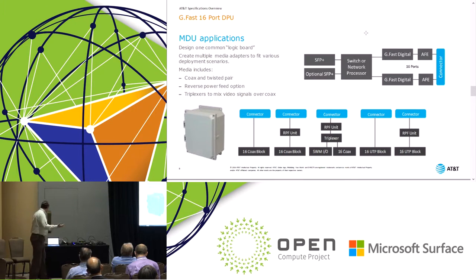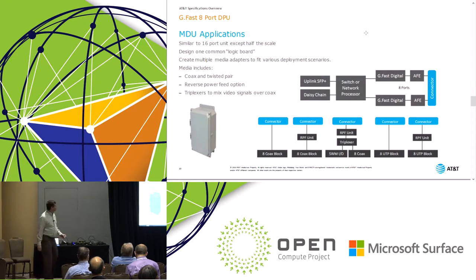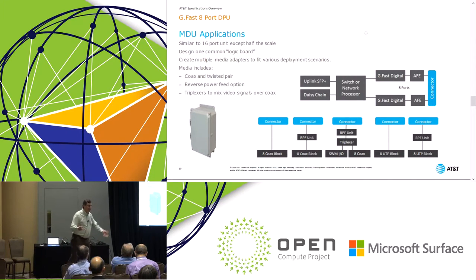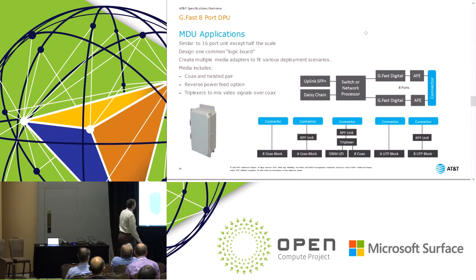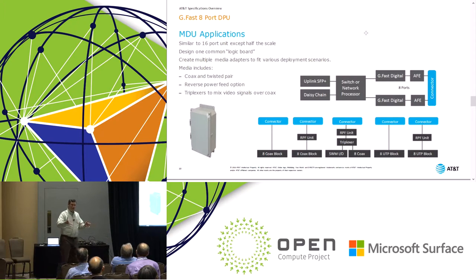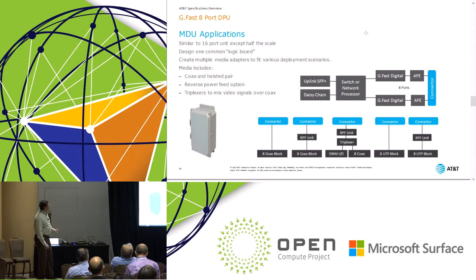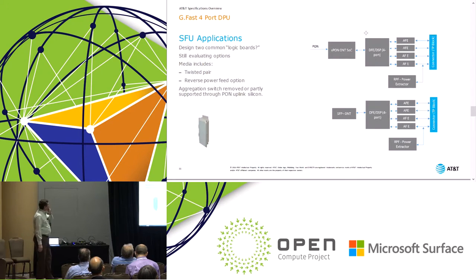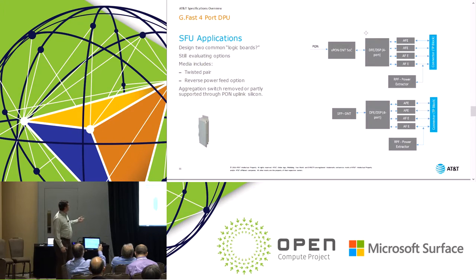If we can do this for 16 ports, we can do it just as easily for 8 ports. It's the same basic technology, just smaller. One difference is that in this size we may add the option to daisy-chain units instead of having lots of uplinks. That's probably the most important distinction.